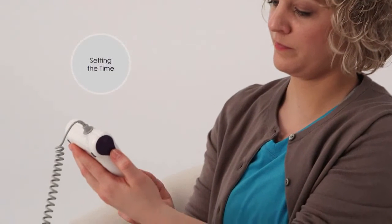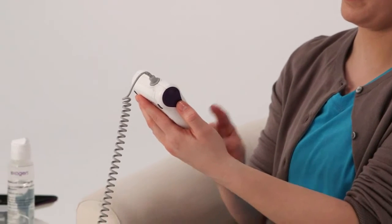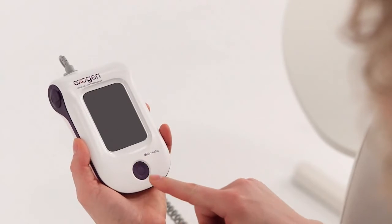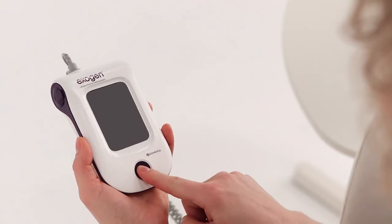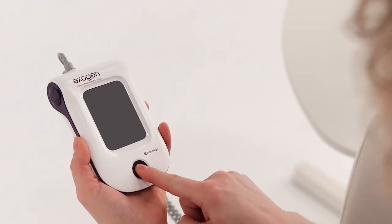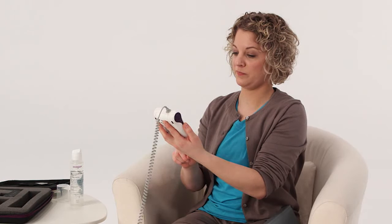The first time you use your device, you'll need to set the time. This ensures that your treatments are being logged accurately. To set the time, press the button once. When the hour and a.m. or p.m. appear on the screen, continue to press the button to advance the time until the correct hour and a.m. or p.m. are displayed. You don't need to set the minutes.